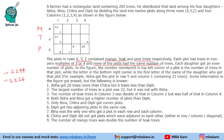In the figure, the number mentioned in the top left corner is the number of trees in that plot while the letter is the first letter of the name of the daughter who got that plot. For example, Abha got row Y and column 1 containing 21 trees. Some information is given to us — 9 pieces in total to solve this caselet.